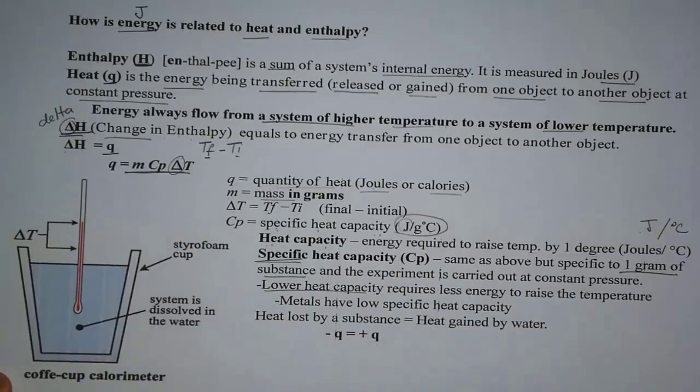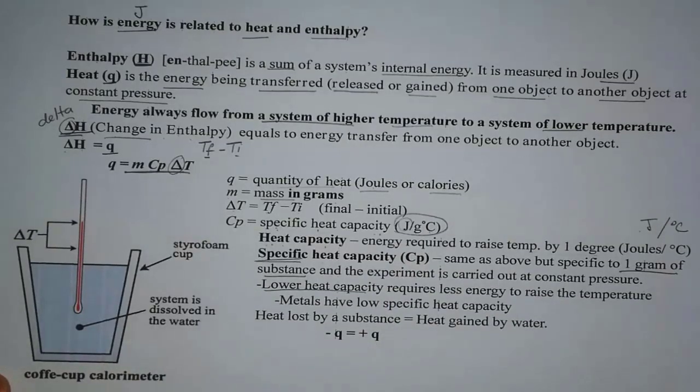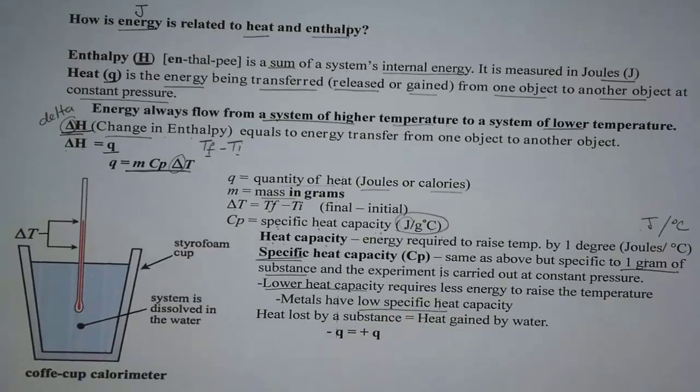And where the one that has very high specific heat capacity, it would require a lot of energy. For instance, metals have very low specific heat capacity. That's why we use metals in our cookware, so that way it will easily increase the temperature. So we can cook faster.